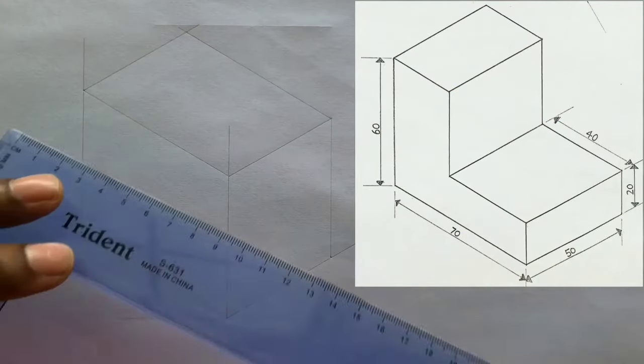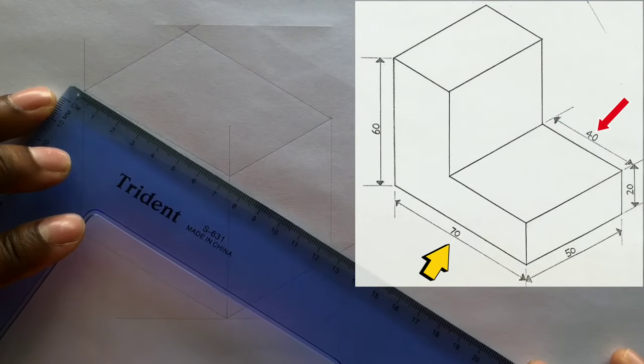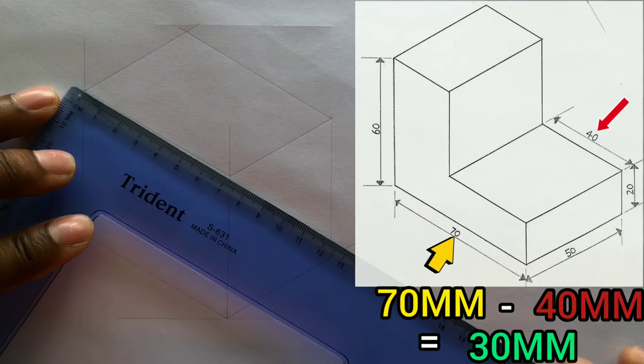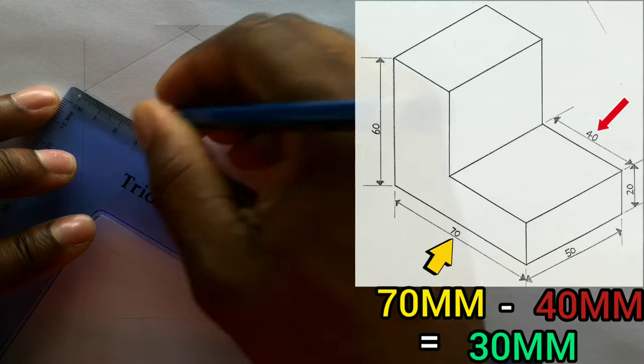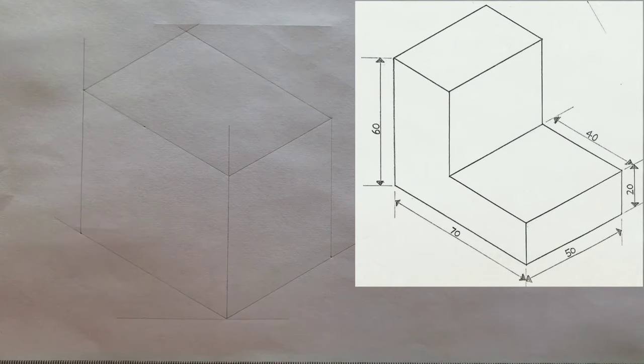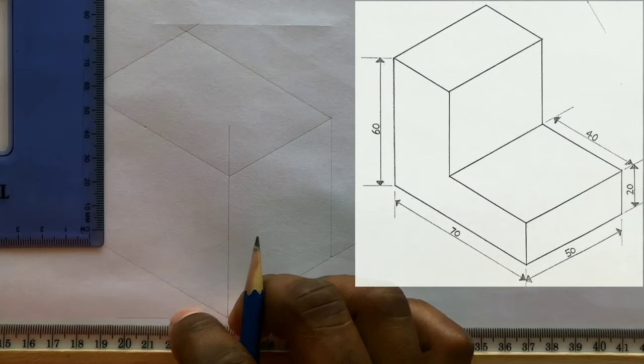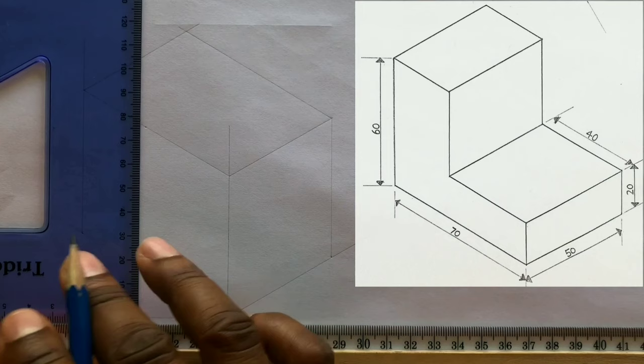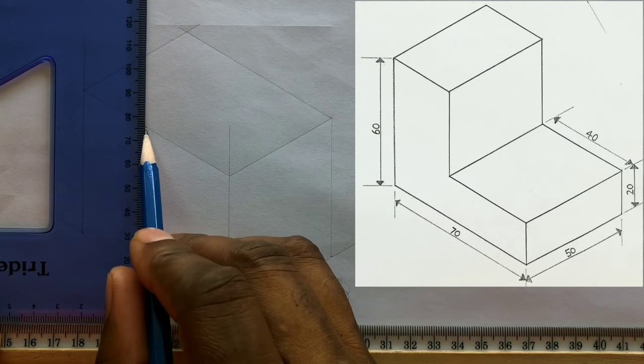You will now measure and identify 30 millimeters on this line. Now draw a vertical line using your t-square and your set square from the point you identified previously.